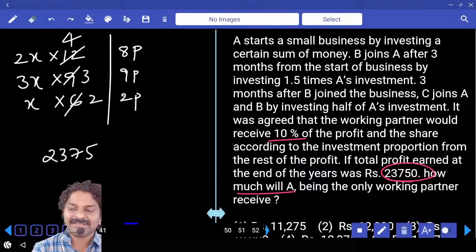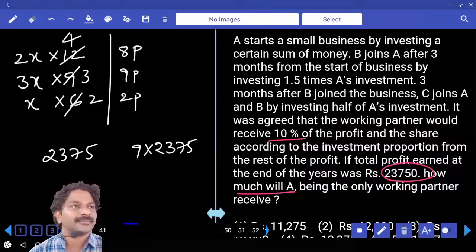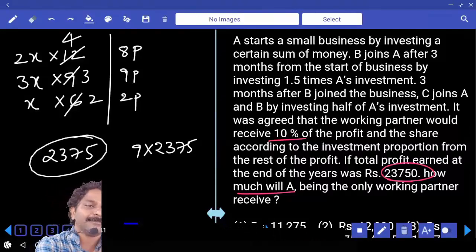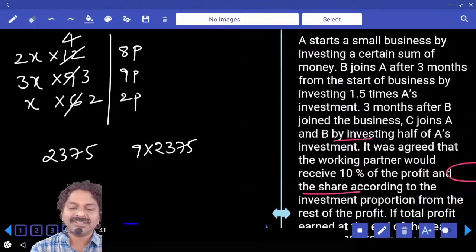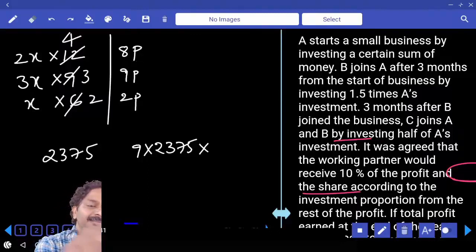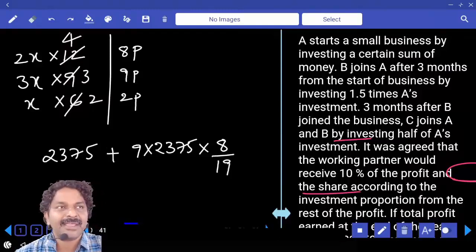And remaining is 9 times 2375 only. 90%. This is 10% and this is 90%. So out of this 90% A gets 8 parts out of total 19 parts. And this is the amount received by A.